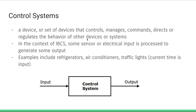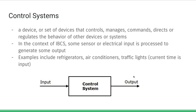A great example of this is a refrigerator. In a refrigerator, we have a temperature sensor that constantly feeds a digital signal to a microprocessor. That microprocessor checks whether the current temperature matches the desired temperature, and based on that, it sends a digital signal to the cooling element to either warm up, cool down, or just do nothing.